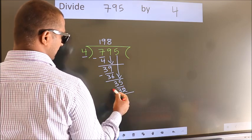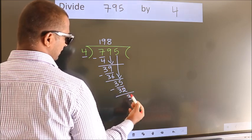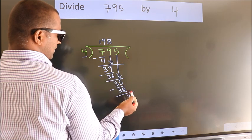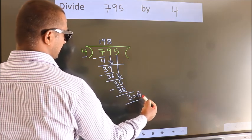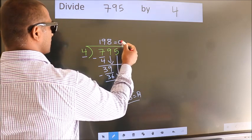Now, we subtract. We get 3. No more numbers to bring it down. So, we stop here. This is our remainder. This is our quotient.